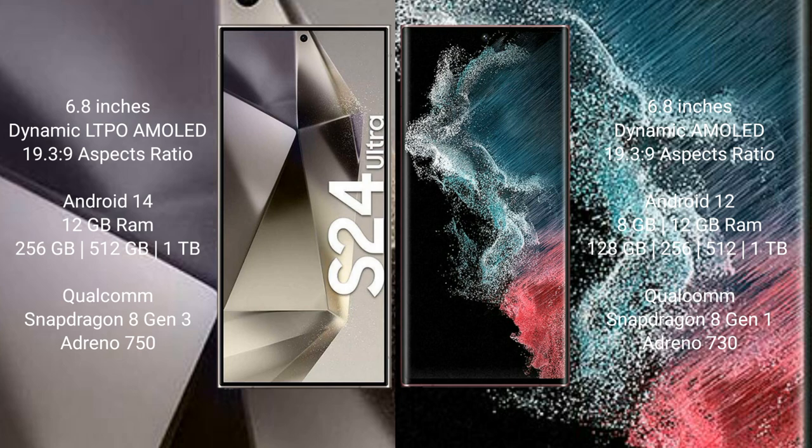Samsung Galaxy S24 Ultra comes with 12GB RAM and 256GB, 512GB, or 1TB internal storage, with a Qualcomm Snapdragon 8 Gen 3 processor and Adreno 750 GPU.